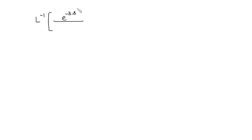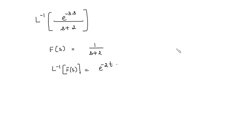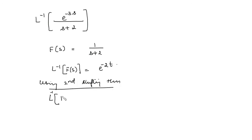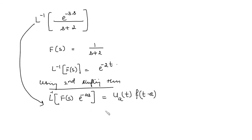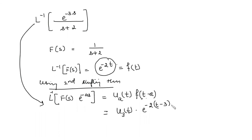We can also find inverse Laplace transforms using the Second Shifting Theorem. Whenever e^(-as) appears in F(s), we apply the theorem. For example, find the inverse Laplace of e^(-3s)/(s+2). Here F(s) = 1/(s+2), whose inverse Laplace is e^(-2t). By the Second Shifting Theorem, the inverse Laplace of e^(-as)·F(s) is u(t-a)·f(t-a). Comparing with a=3, the answer is u(t-3)·e^(-2(t-3)).